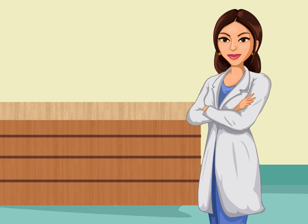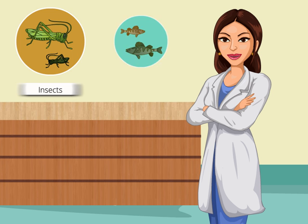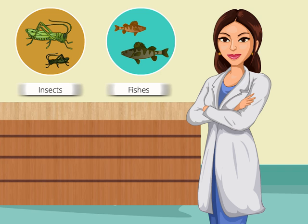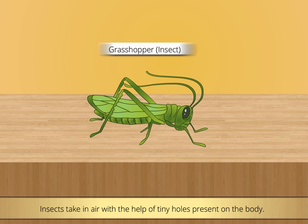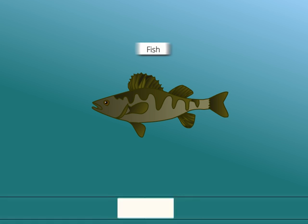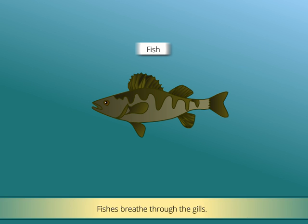They breathe through the tiny holes present on their beaks. Have you ever wondered how insects and fish breathe? Insects have tiny holes present on their bodies. They take in air with the help of these holes. Whereas, fish have a special organ for breathing called gills. They inhale the oxygen present in water.